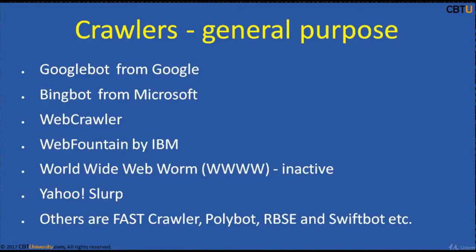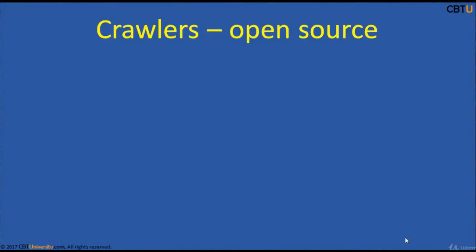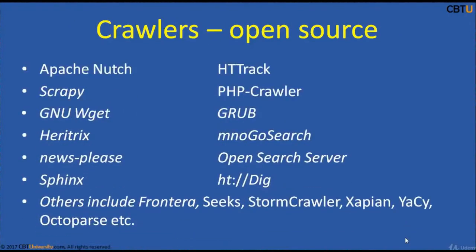Yahoo Slurp was Yahoo's search crawler until Yahoo joined with Microsoft to use Bingbot instead. Other popular crawlers include Fastcrawler, Polybot, RBSC, Swiftbot, and others.